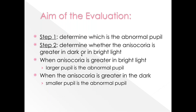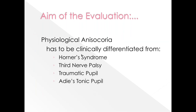When examining, first rule out physiological anisocoria; if not physiological, determine whether it is Horner's syndrome, third nerve palsy, traumatic pupil, or Adie tonic pupil. Horner's syndrome results from disruption of the sympathetic pathway. Classically: anisocoria greater in dim light, small miotic pupil reacting equally to light and near, mild ptosis and reverse ptosis, apparent enophthalmos, and anhydrosis of the affected side of the face. Heterochromia of the affected iris is often present in congenital Horner's syndrome.